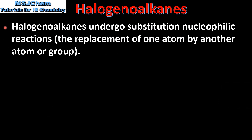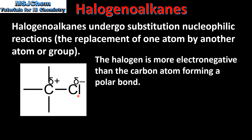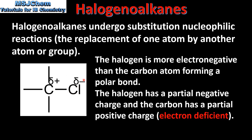Halogeanoalkanes undergo nucleophilic substitution reactions — that's the replacement of one atom by another atom or group. Because the halogen is more electronegative than the carbon atom, we have a polar bond. The halogen has a partial negative charge and the carbon has a partial positive charge, therefore the carbon atom is electron deficient.